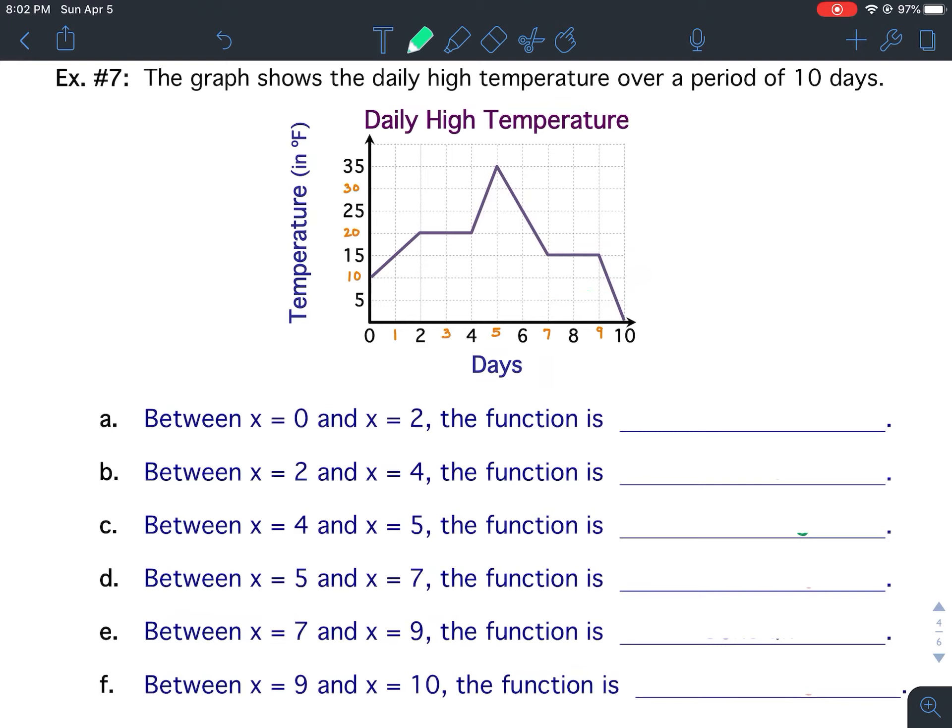For part a, between x equals 0 and x equals 2, the function is what? Let's look. Down here, this is where our x-axis is, so I want to look from 0 to 2. This right here would be from 0 to 2, and what's happening there? It's going upward, so that means the function is increasing. From x equals 0 to x equals 2, the function is increasing.